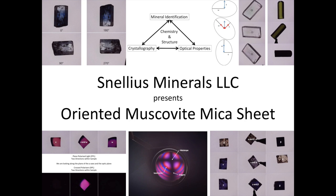In this video we're going to explore different experiments that you can do with the oriented muscovite mica sheet from Snellius Minerals. This is our first example of a biaxial specimen that we have for sale. If you'd like some more background on the behavior of biaxial materials, check out the video 'Optical Mineralogy: Biaxial Materials.' Many of the experiments we'll look at today are classic for optical mineralogy, however our muscovite has a complication in that it is monoclinic.